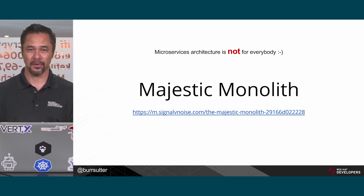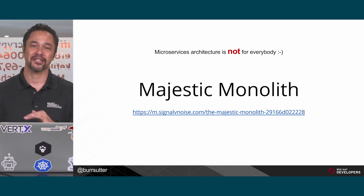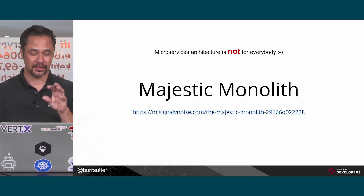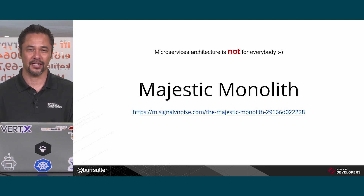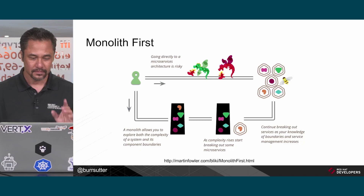There's a great blog article by DHH, the guy behind Ruby on Rails, that talks about the majestic monolith. In his case, his organization can deploy their monolithic application to production every week. We've seen other organizations go from a three-month or six-month deployment cycle down to one week, and for their business, one-week deployments are fast enough. In his specific case, he felt microservices are not for him — I encourage you to read that blog article.